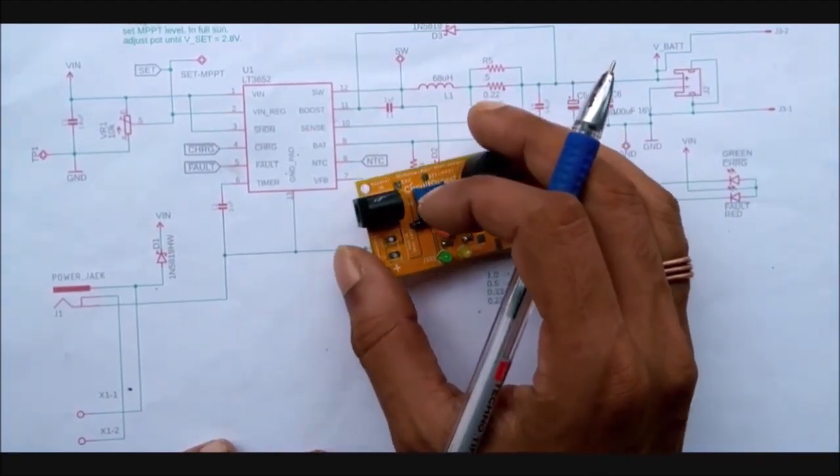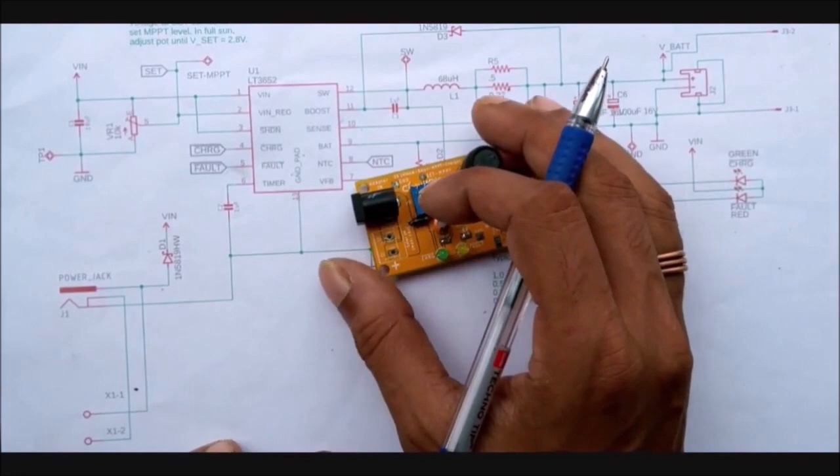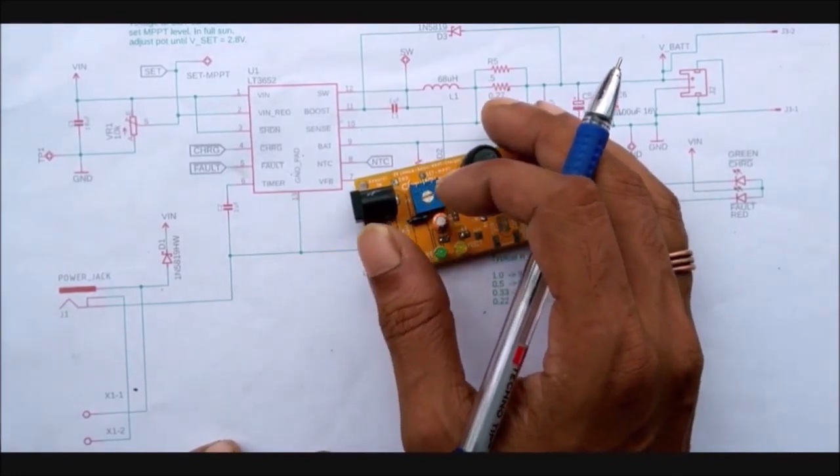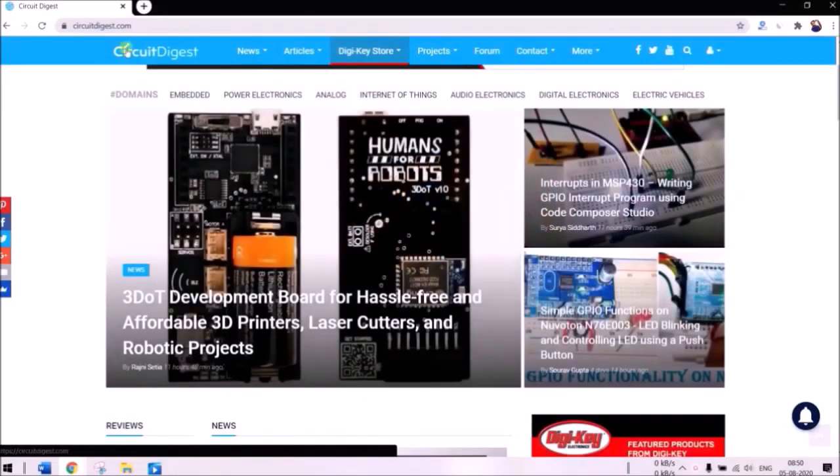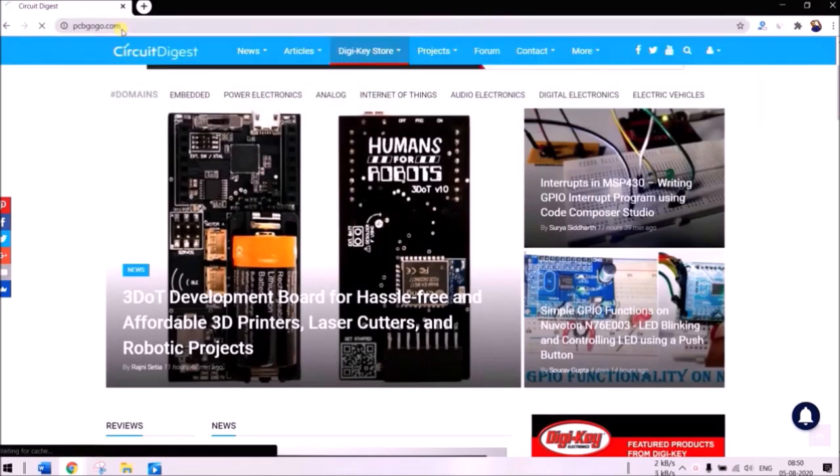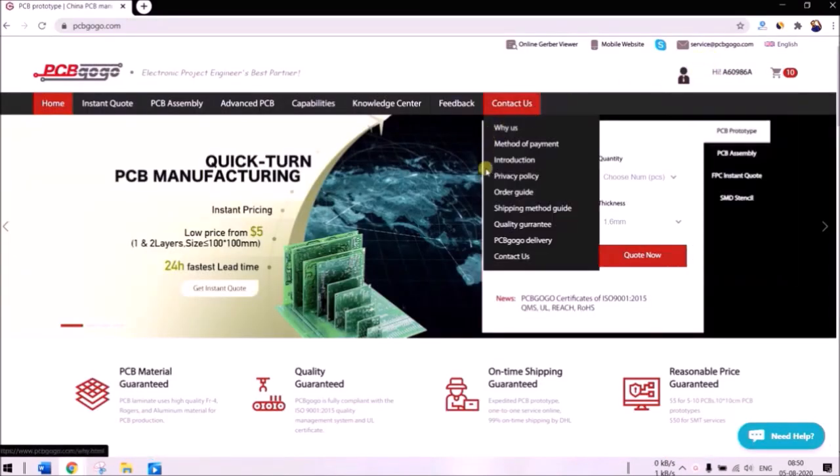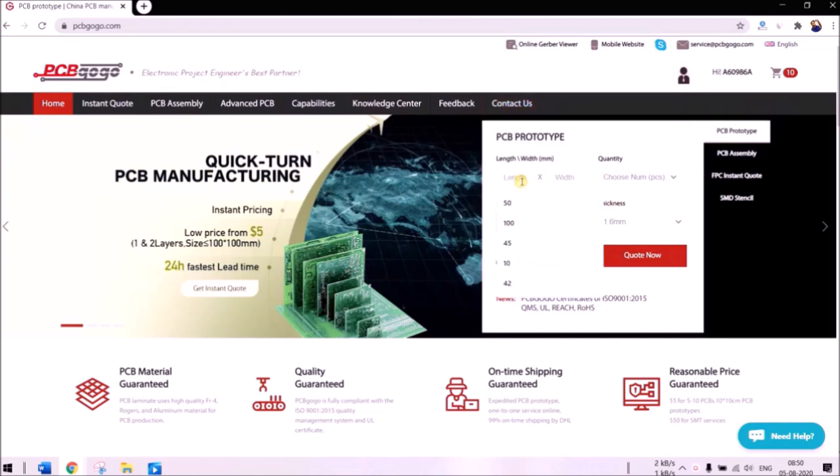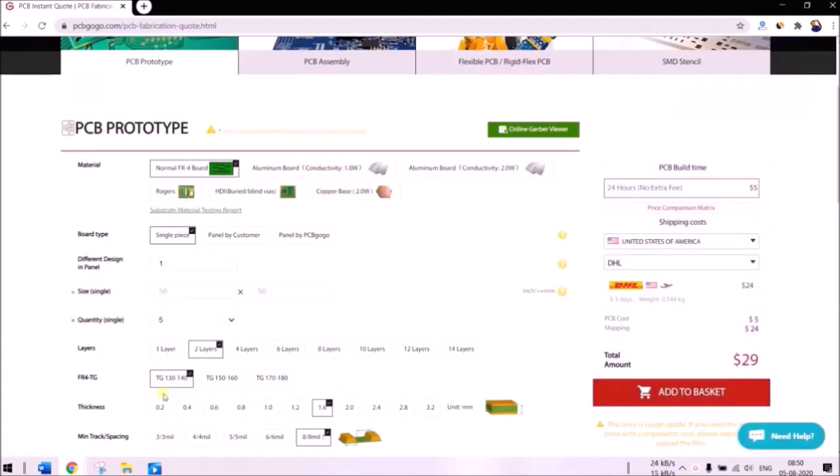But before that I should mention that I fabricated this board from PCBGoGo. You can also easily use these services by getting into their website PCBGoGo.com. Make sure you have already signed in then over here enter the dimensions of your PCB. Say mine is 50 x 50 centimeter and the number of PCB I need is 5. Then for me the number of layers 2 and thickness is 1.6 mm. Click on quote now and you will be taken to the next page where you can change few more properties of your PCB.